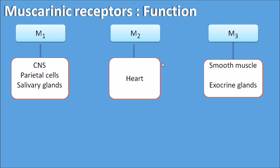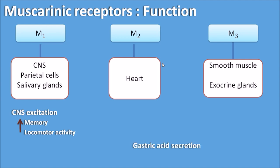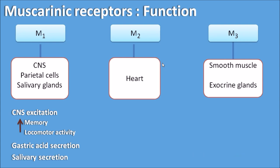Now let us see the functional roles of these muscarinic receptors. M1 receptors present within the CNS are responsible for CNS excitation, which increases memory as well as locomotor activity. That is why drugs which increase cholinergic transmission improve symptoms in Alzheimer's disease by improving memory. M1 receptors are also responsible for gastric acid secretion from the gastric parietal cells and for salivary secretion from the salivary glands.